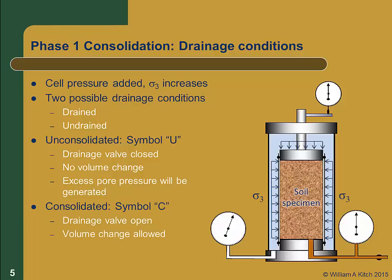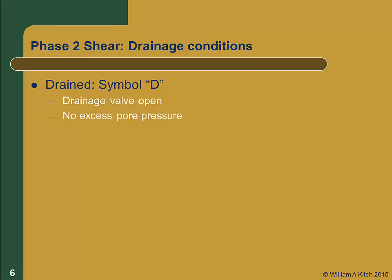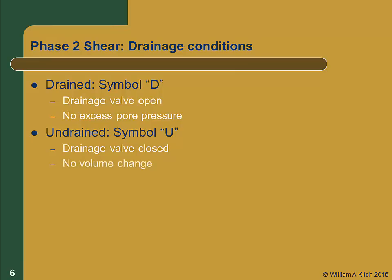If the drainage valve is open during consolidation, the soil will be allowed to change volume and all excess pore pressures will be dissipated by the end of the consolidation phase. During phase 2, the shear phase, the drainage valve may either be open or closed. If the valve is open, we call the phase drained and use the letter D. In a drained test, the assumption is that there are no excess pore pressures generated during shearing; we must run the test very slowly so that any pore pressures have time to dissipate, which is particularly important for clay soils with low hydraulic conductivity. If we close the drainage valve during the shear phase, we have an undrained test represented by the symbol U, there will be no volume change, and shear-induced pore pressures will be generated. We commonly measure the pore pressures generated during shear, which allows us to compute the effective stress within the specimen.